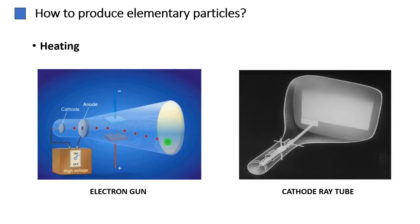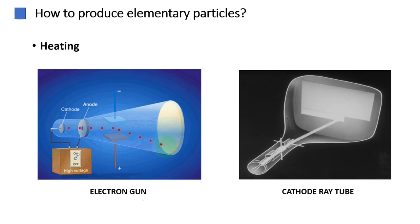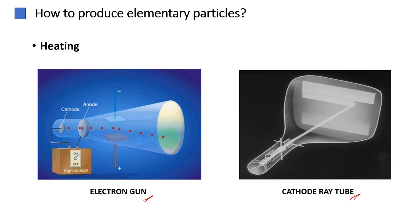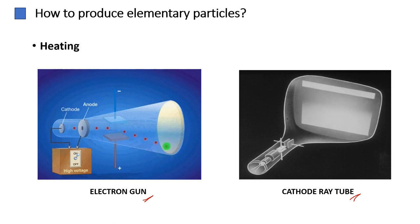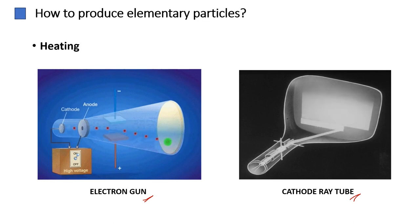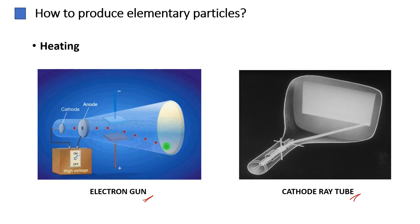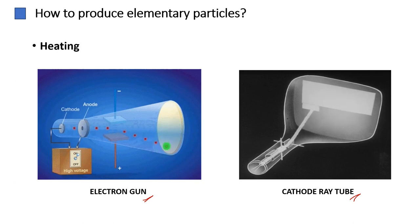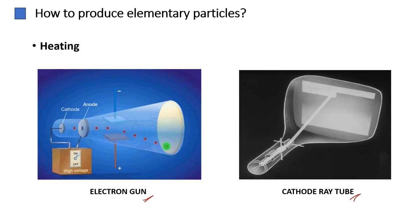Heating plays a crucial role in electron emission. In an electron gun, typically found in cathode ray tubes, heating is applied to a cathode. This process, known as thermionic emission, involves raising the temperature of the cathode, causing it to release electrons into the surrounding space. These emitted electrons form the basis of the electron gun, which focuses and accelerates them using electromagnetic fields. Once accelerated, the electron beam becomes a dynamic tool for creating visual displays.